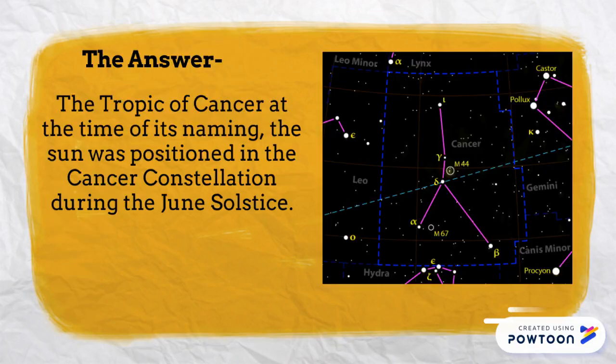The answer is that the Tropic of Cancer was named because, at the time of its naming, the sun was positioned in the Cancer constellation during the June solstice.